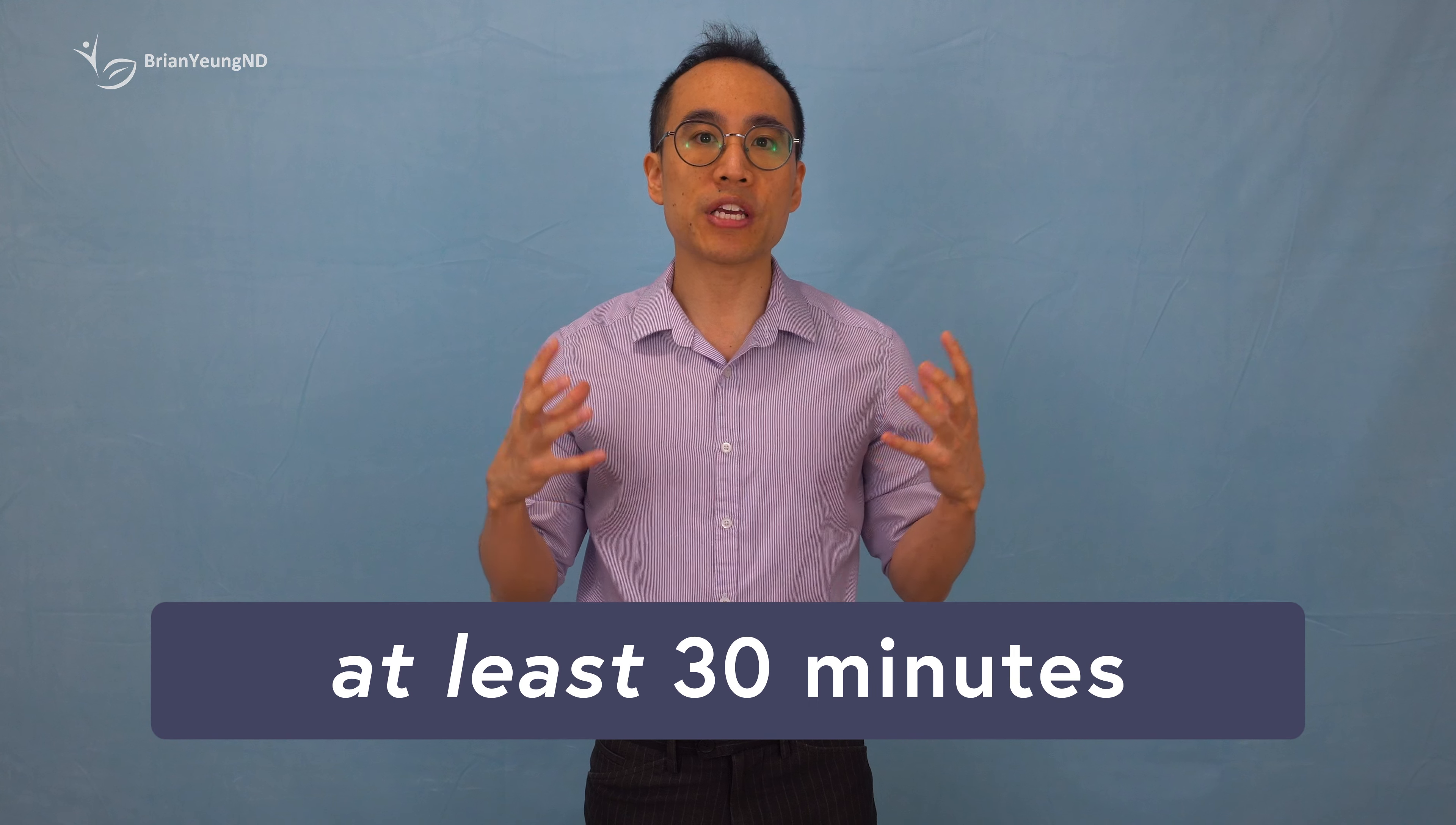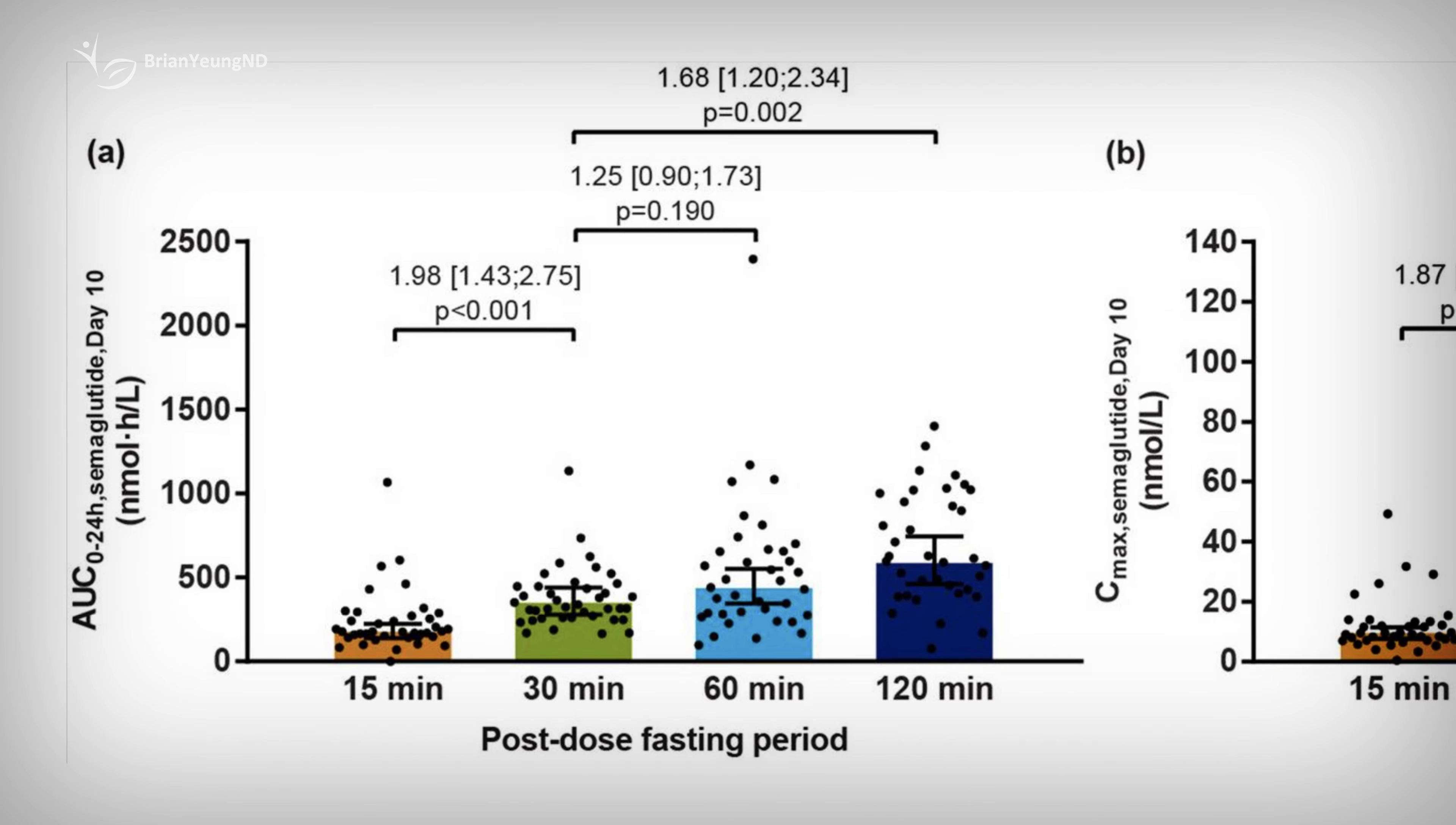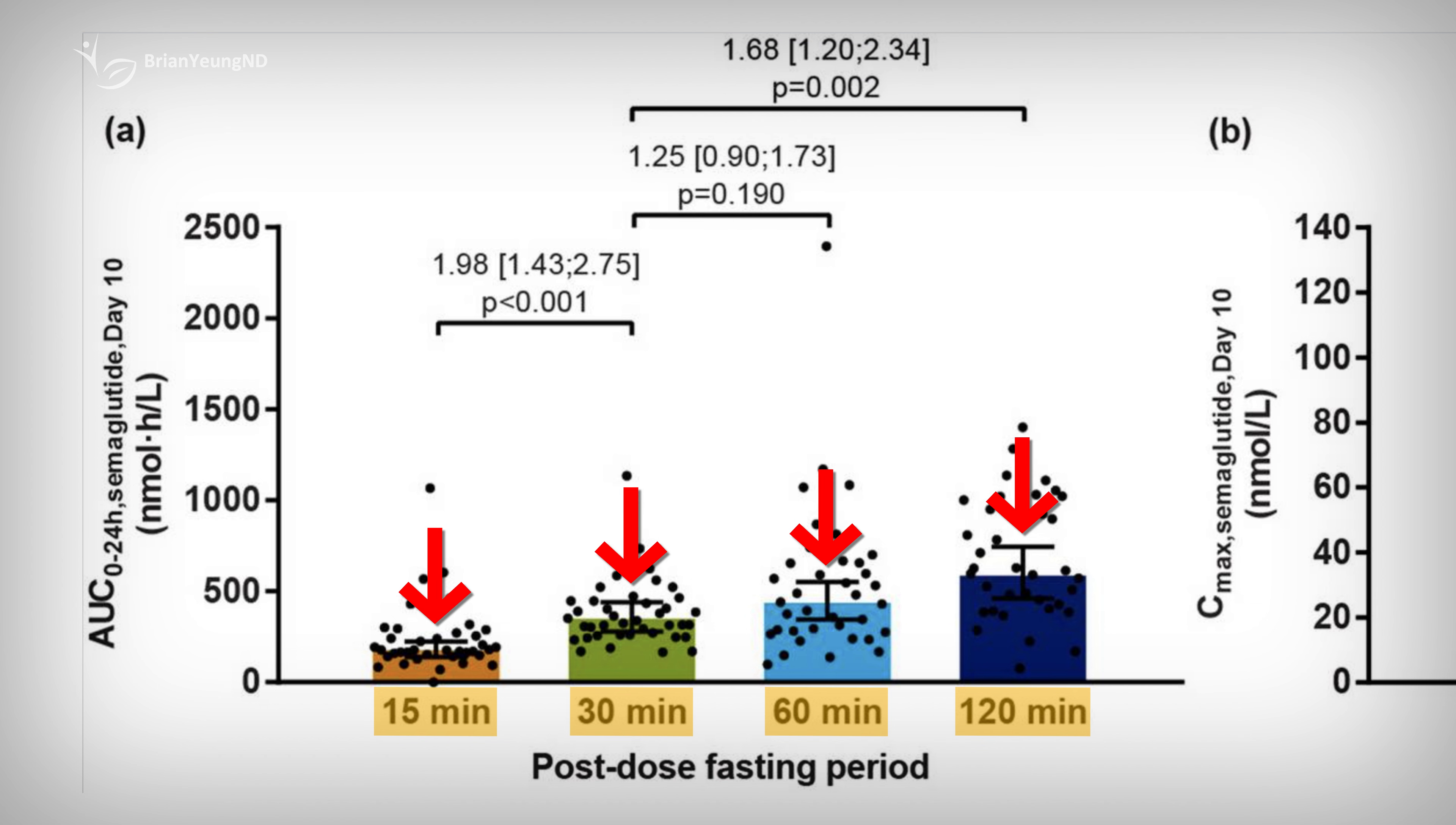Finally, you'll need to wait at least 30 minutes after taking oral semaglutide before eating. Studies comparing different wait times of 15, 30, 60, and 120 minutes found that the longer you wait to eat, the more semaglutide is absorbed. For example, waiting 120 minutes resulted in over three times more absorption than waiting only 15 minutes. The final recommendation of 30 minutes is likely a balance between effective absorption and practical waiting time. I mean, it might be pretty difficult to not eat for two hours after taking oral semaglutide.